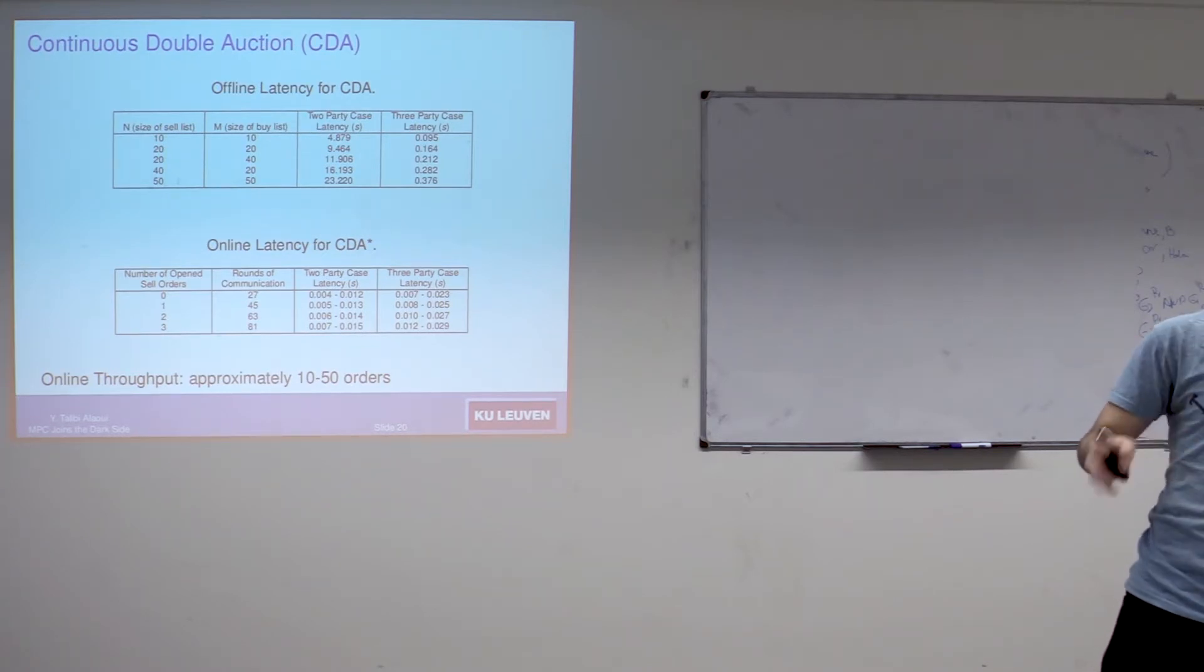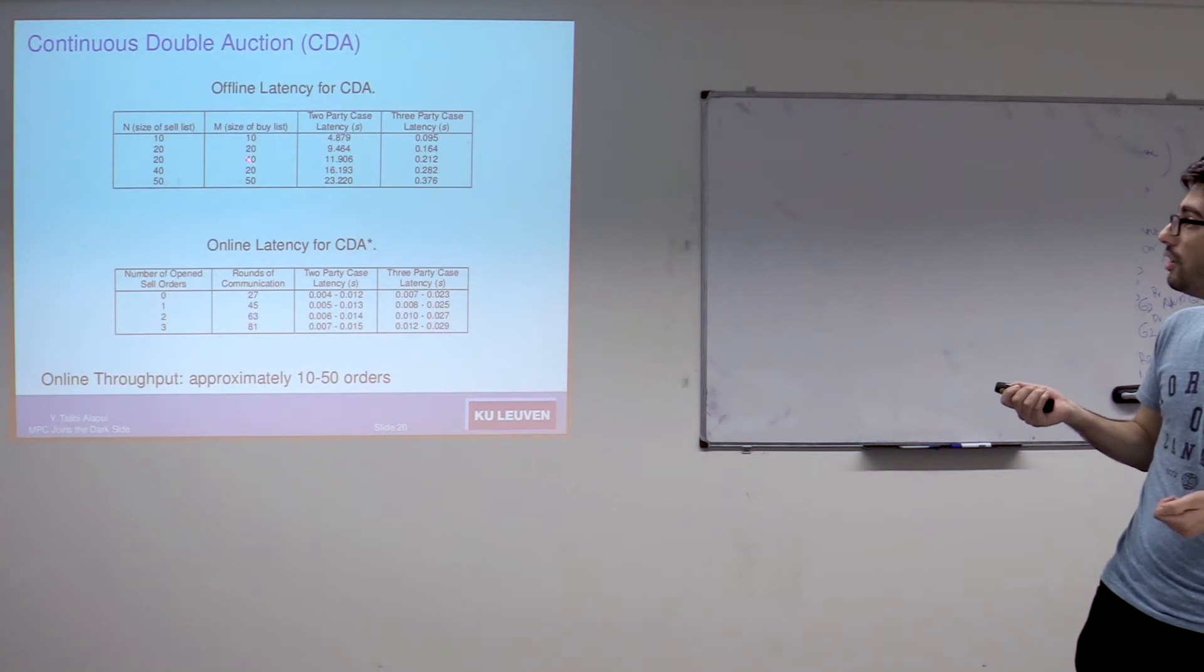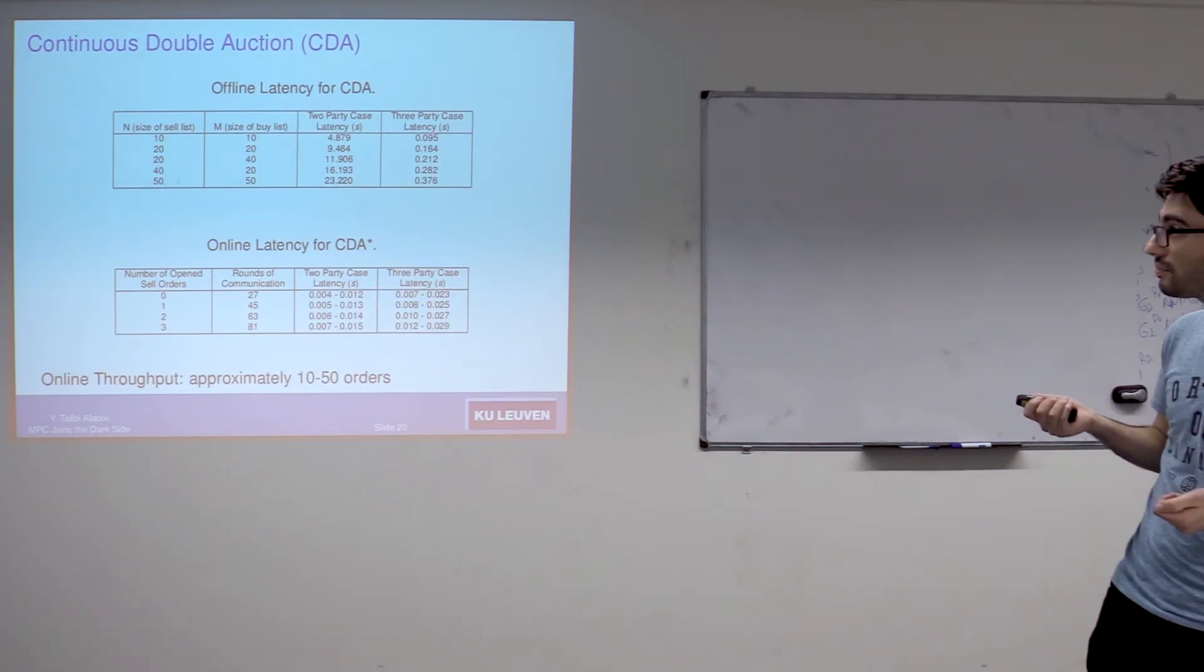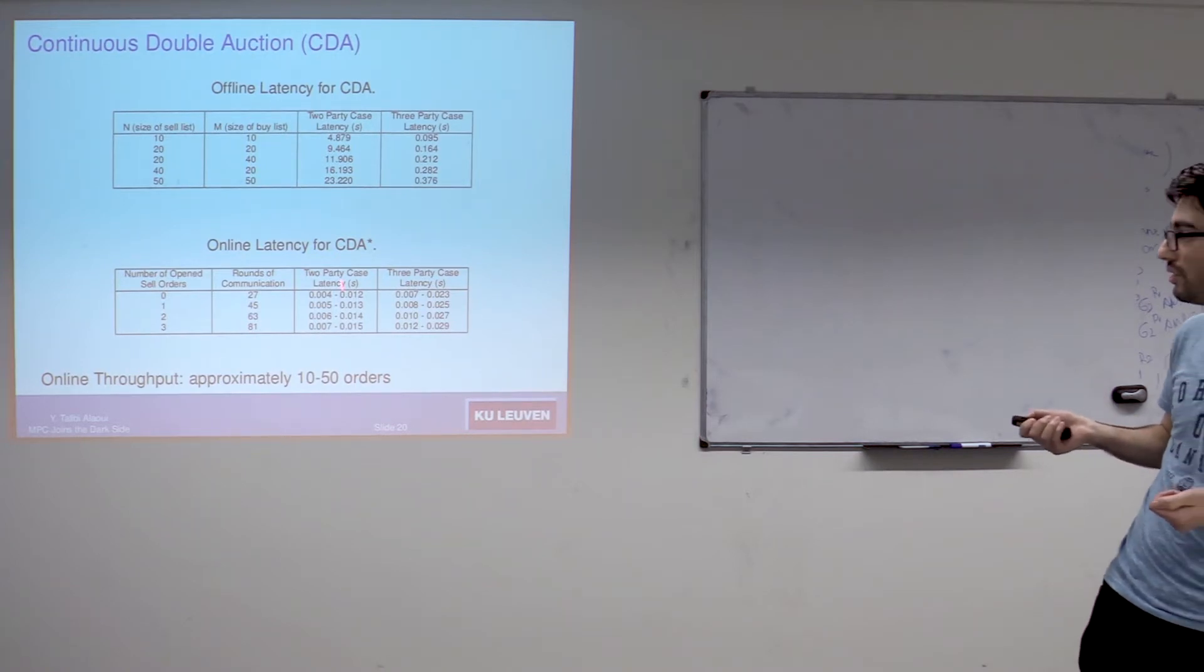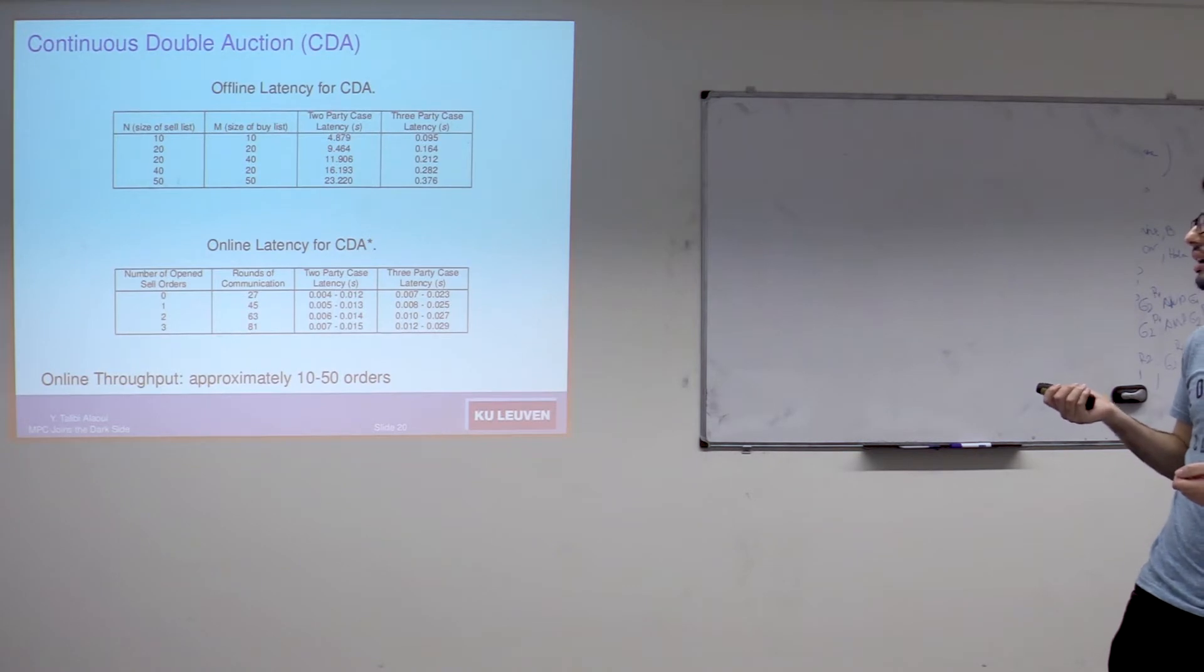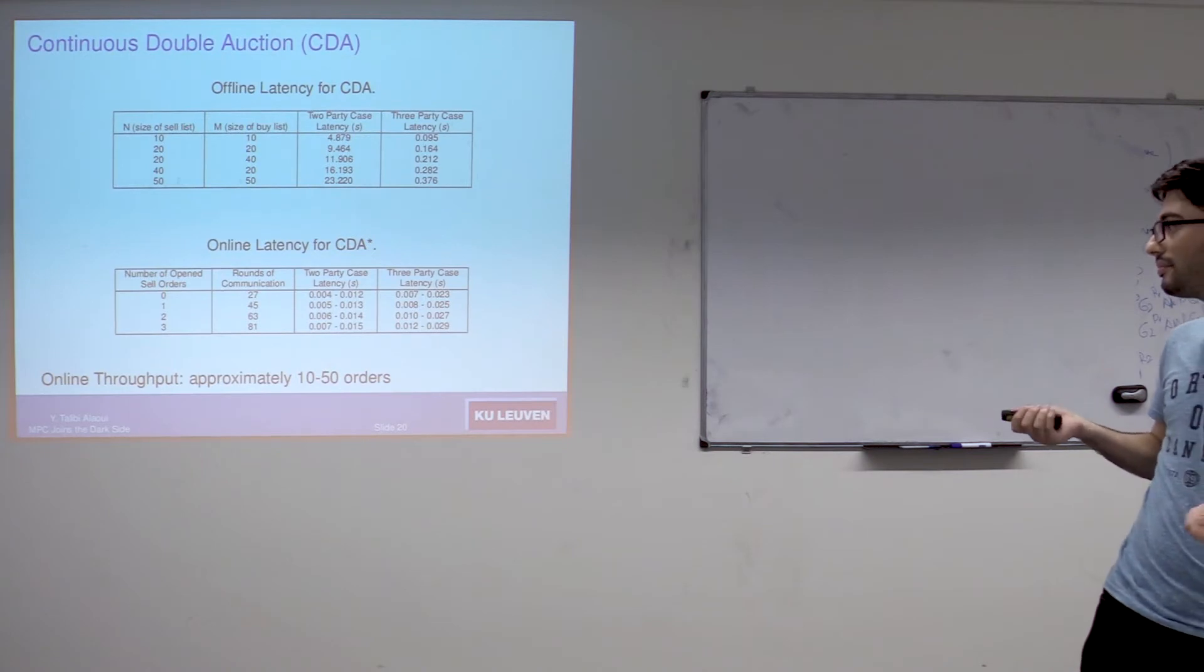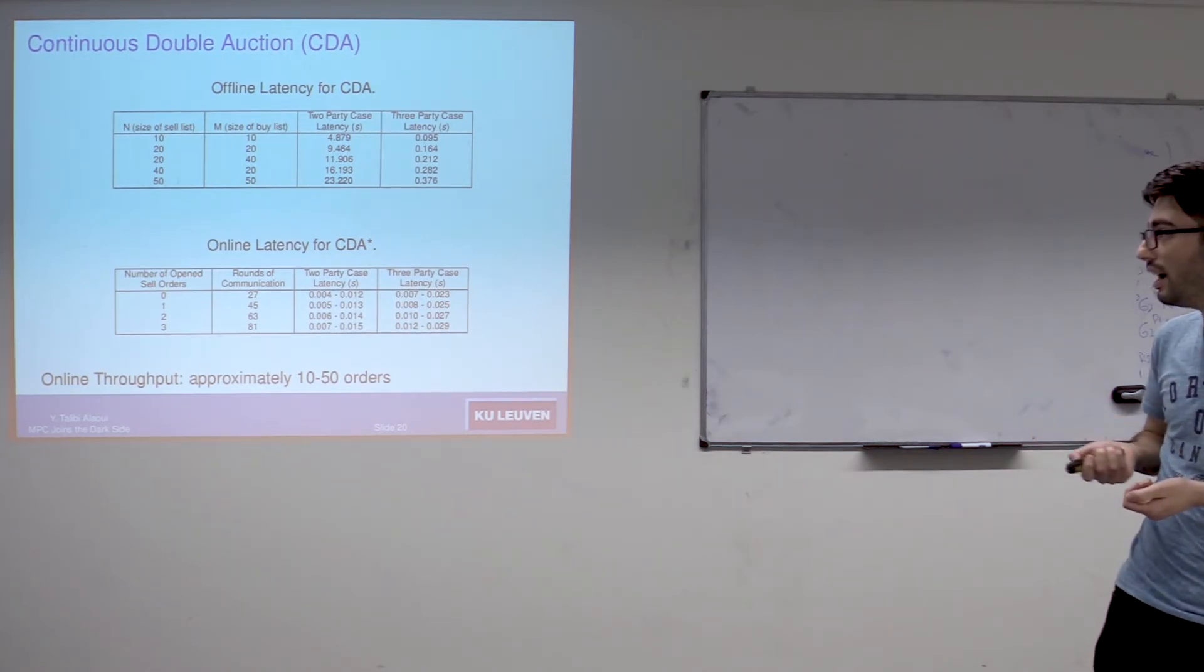For runtimes for this first algorithm - by the way, I tried to pack runtimes, but in the paper we have several tables with more details. For the offline phase, the latency of the two-party case is much slower than the latency of the three-party case. Whereas for the online phase, the latency of the three-party case is slower than the latency of the two-party case. We can explain this by the fact that the underlying protocols that we're using are different to ensure security in the two-party case and the three-party case.